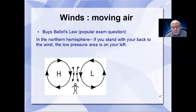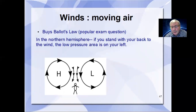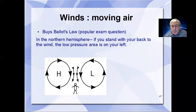Buys-Ballot's law is a popular exam question. In the northern hemisphere, if you stand with your back to the wind, the low pressure will be on your left. This holds true wherever you stand in the system. You can use this at the airfield — stand with your back to the wind and the low pressure will be on your left. Repeating this during the course of the day allows you to track the travel of the low pressure system.